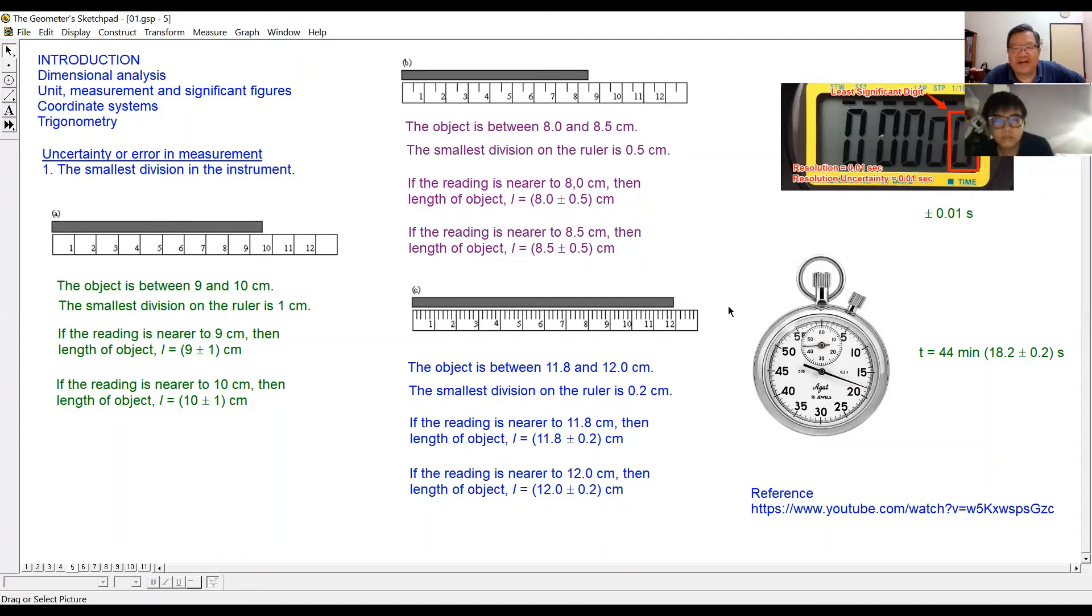So now last one here. How many divisions actually in this one? Five divisions. Each division? 0.2. Correct, 0.2. So can you tell me what is the reading of this black object? 11.8 to 11.9.